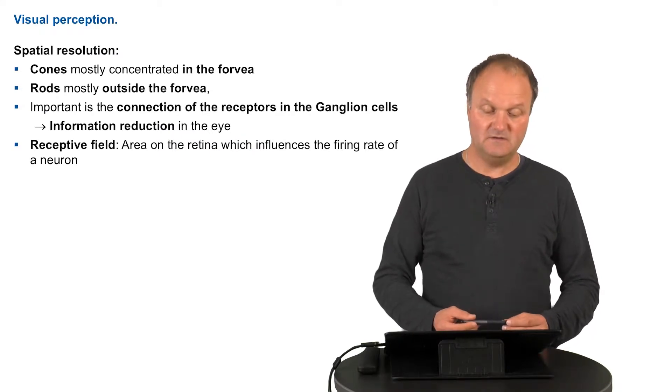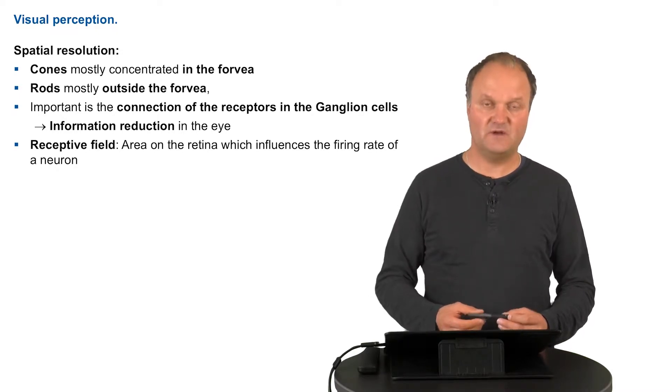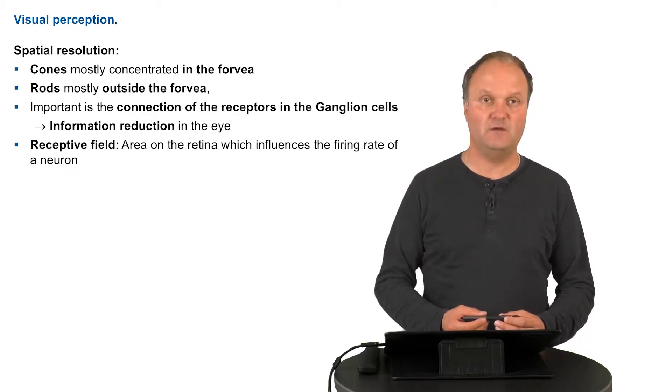In addition to these differences in concentration, there is also a concentration of information happening inside the eye. Actually, we have more than 100 million receptors, and this information needs to be somehow transported to the brain.